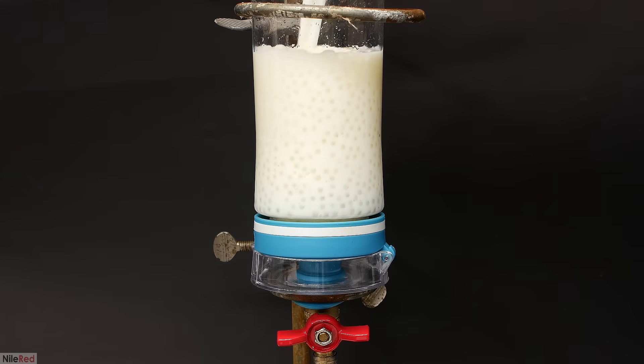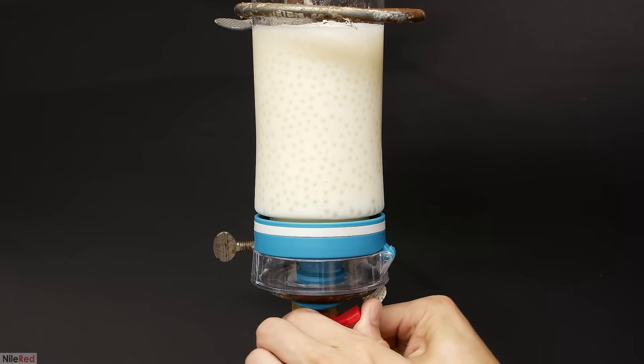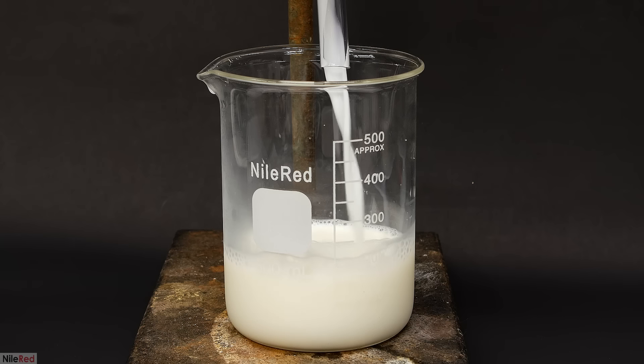The general procedure here was to add the milk, let it sit for about two minutes, drain it out into a beaker, and then test the glucose content.